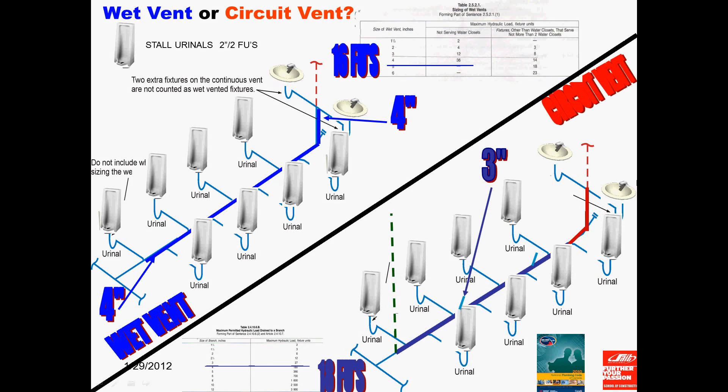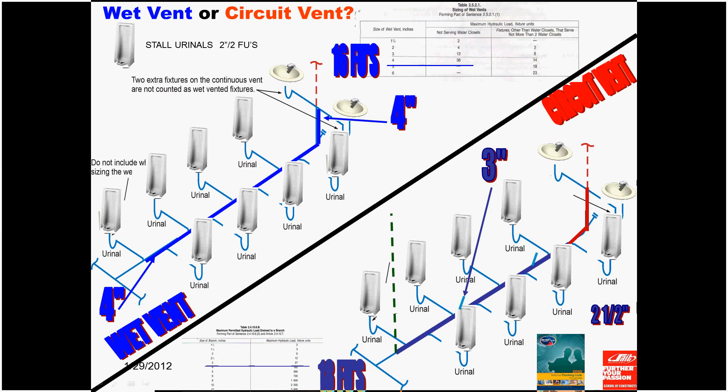So, now we want to size the clean out above this clean out, this 3 inch clean out. This particular clean out is now going to be serving all the fixture units right up to the 3 inch clean out, which would mean a total of 5 urinals and 2 lavs. 5 times 2 fixture units is 10 fixture units, plus the 2 lavs is 12 fixture units.